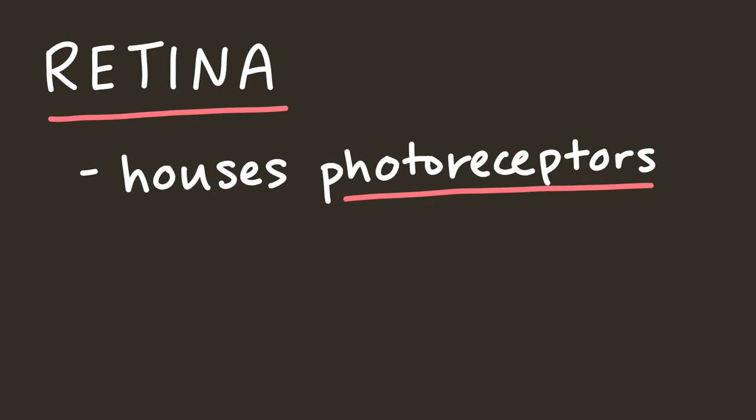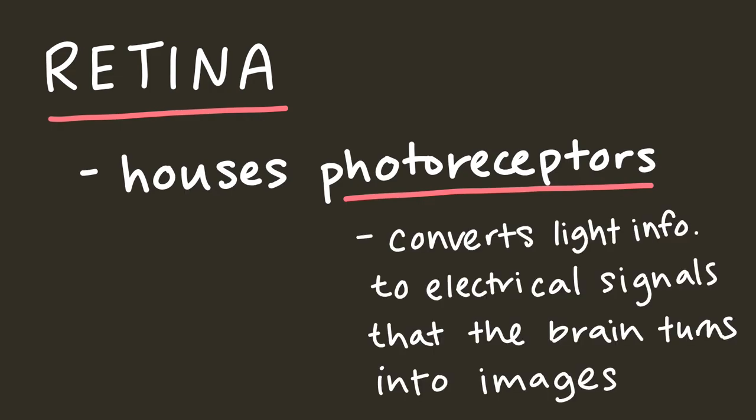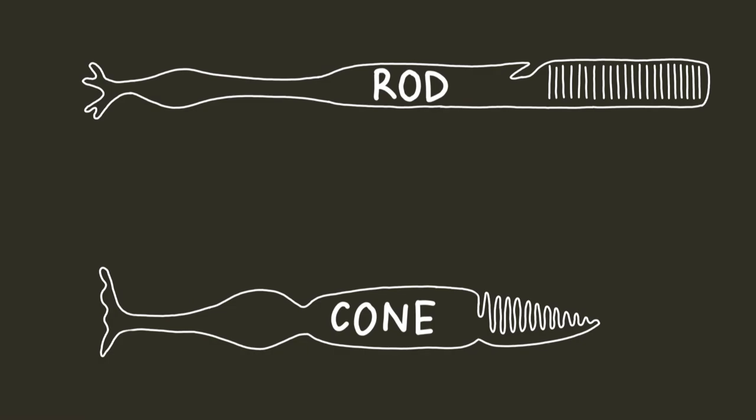The retina contains a bunch of photoreceptors, which are responsible for converting the light information into electrical signals that are then processed into images in the brain. We have two types of photoreceptors, rods and cones. Rods help us see in low-light conditions, while cones help us see in high-light conditions. Cones also give us the ability to perceive color.